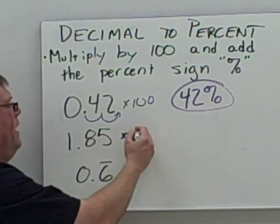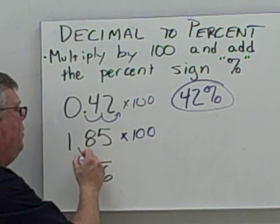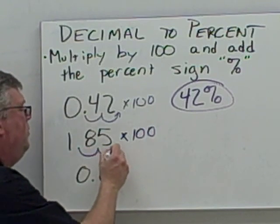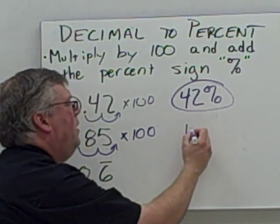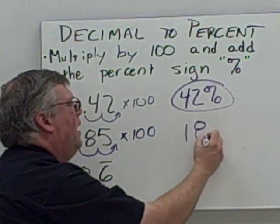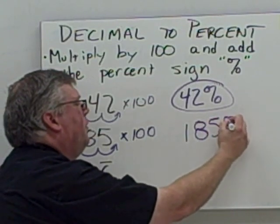Here I've got 1.85. I multiply that by 100, moving over one, two decimal places, and I get 185%.